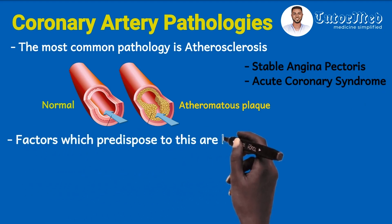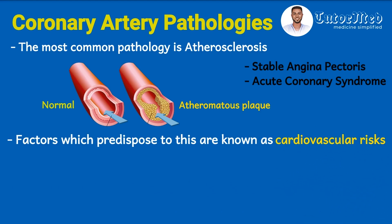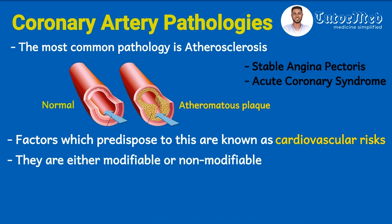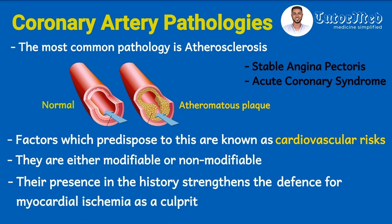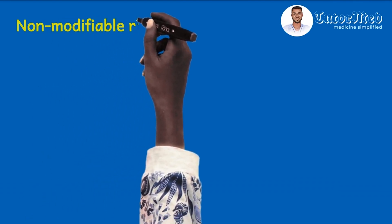The factors which predispose to atherosclerosis are called cardiovascular risk factors. These factors can either be modifiable or non-modifiable. Their presence in the history strengthens the case for myocardial ischemia as a culprit of the patient's chest pain. Let's look at these risk factors briefly, beginning with the non-modifiable risk factors.